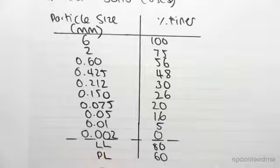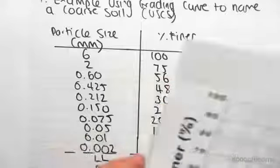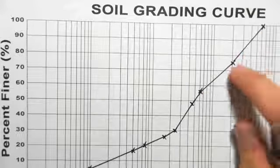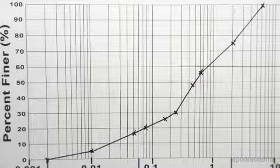We've also got the liquid limit and the plastic limit, and all this information will allow us to draw a soil grading curve where we just plot the corresponding points and join them up. So here would be our grading curve.